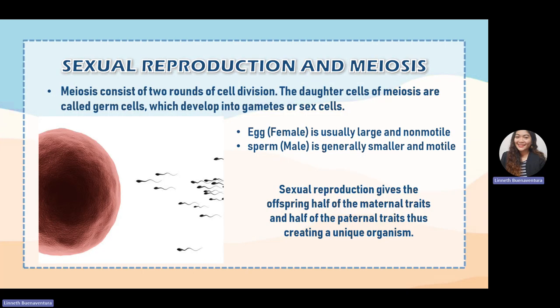Now let's proceed to sexual reproduction and meiosis. Meiosis consists of two rounds of cell division — meiosis one and meiosis two. In meiosis one, during prophase one, crossing over or exchange of chromosomes occurs, allowing for genetic diversity. In animals, the daughter cells of meiosis are called germ cells, and these germ cells develop into gametes.